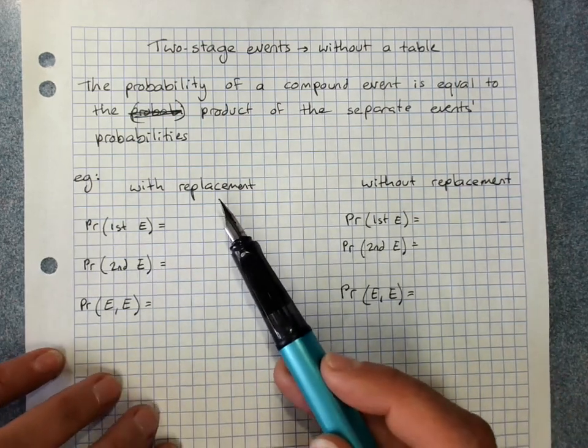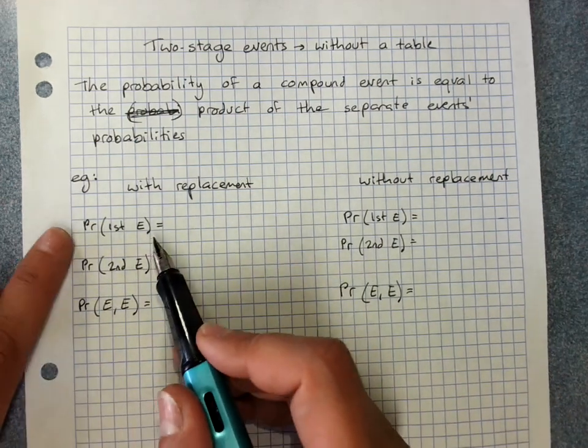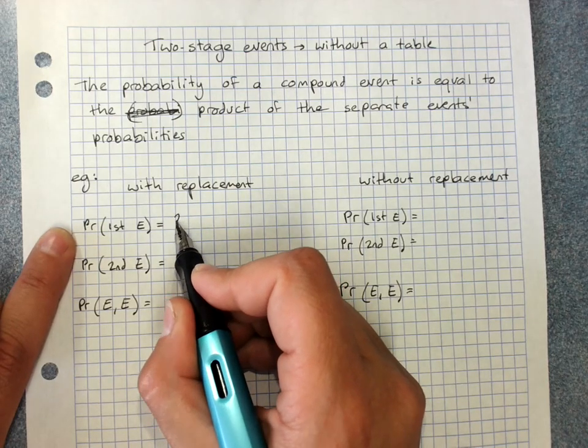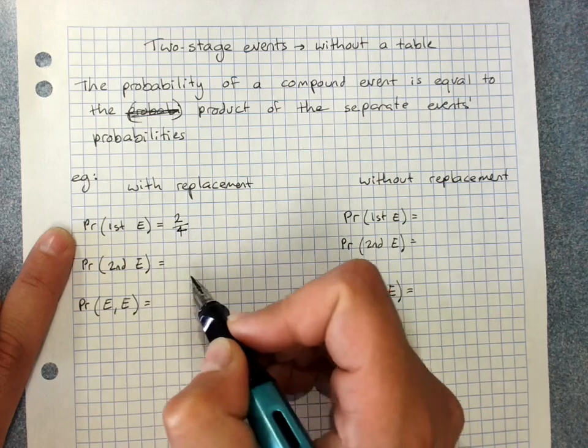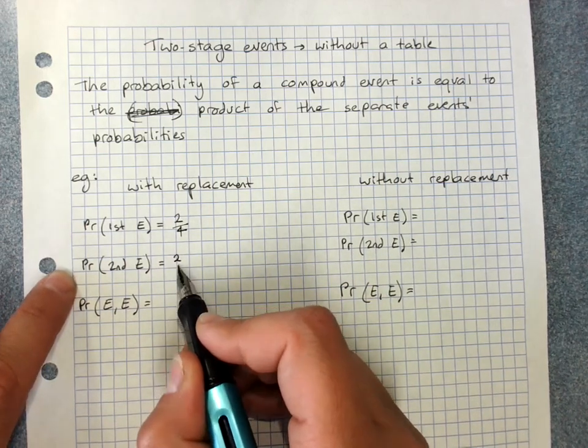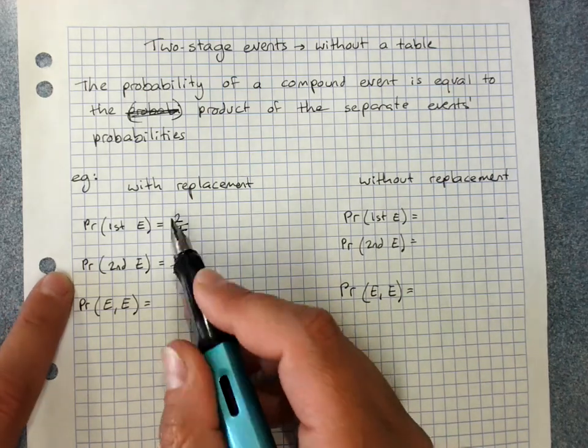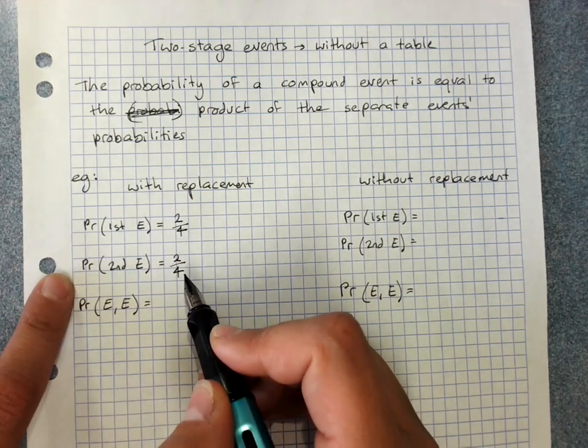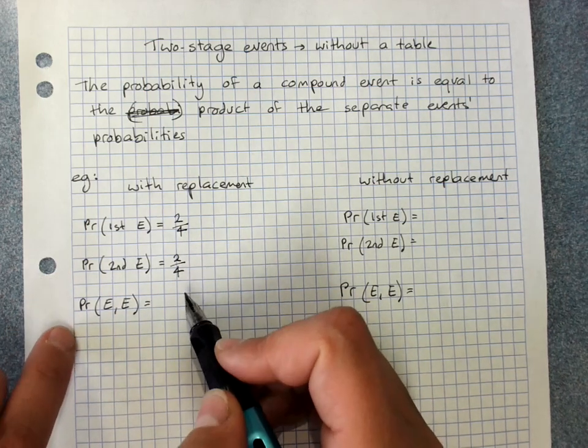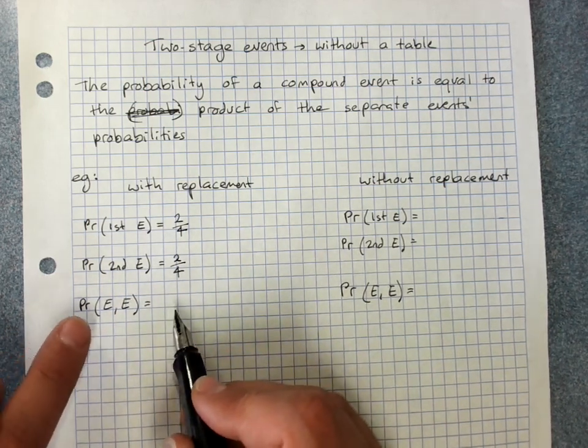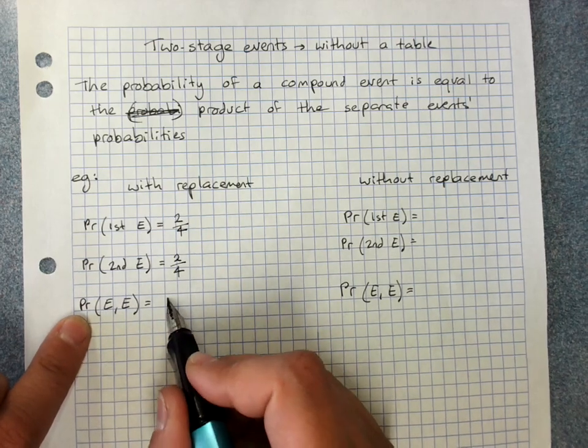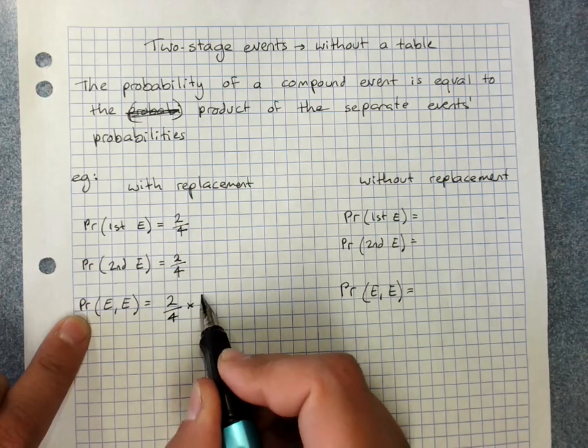So with replacement the probability of the first E was 2 out of 4 and the probability of the second E was 2 out of 4. I'm leaving these as unsimplified fractions just because it will make it a little bit more obvious, but you could simplify them absolutely.